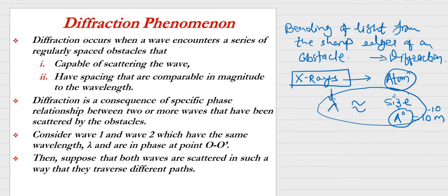For diffraction to occur, the wavelength (lambda) of the incident wave and the size of the obstacle must be comparable. Light falls on us too, but diffraction is not strongly visible because the wavelength of visible light is very different from our size. Two conditions must be met for diffraction: the size of the obstacle must be comparable to the wavelength, and the obstacle must be capable of scattering the wave.